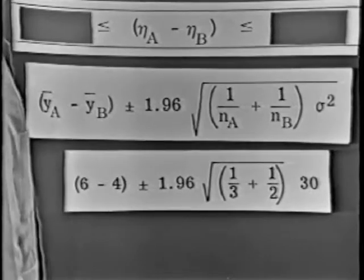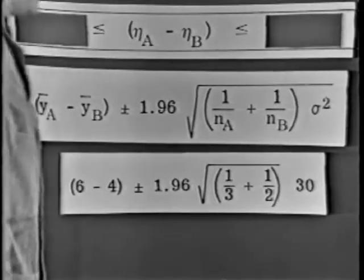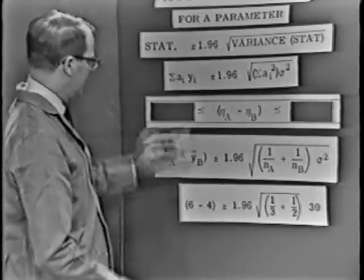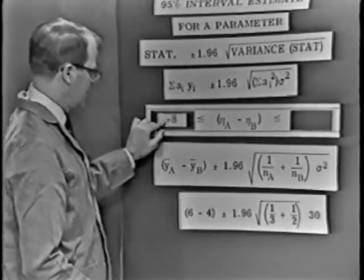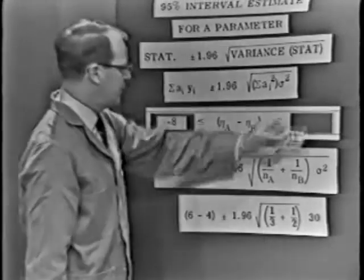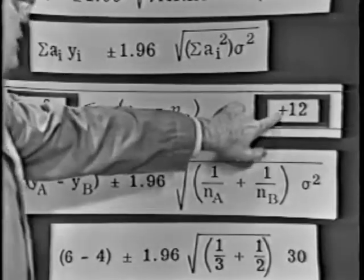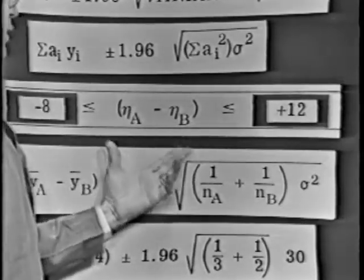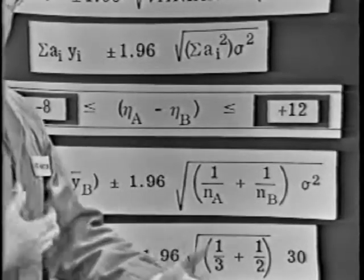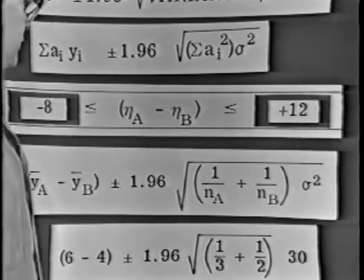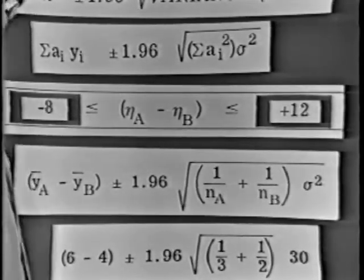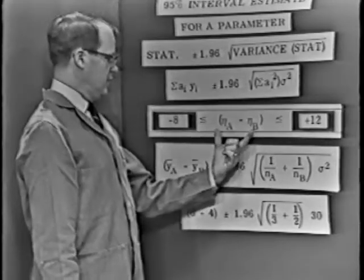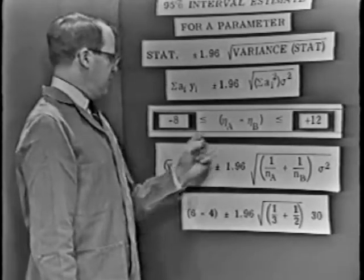Turning that crank, the margin comes out approximately equal to 10. So our interval statement is 2 minus 10, which is minus 8, to 2 plus 10, which is plus 12. In light of this very limited quantity of data and the large variance, all possible values of η_A minus η_B that fall between these two limits are not contradicted by the data. This is a 95% confidence statement.